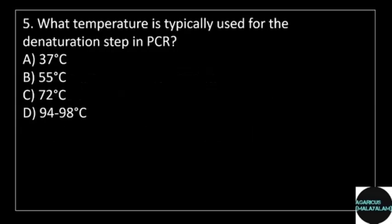5th question. What temperature is typically used for the denaturation step in PCR? Answer options. Option A: 37 degrees Celsius. Option B: 55 degrees Celsius.